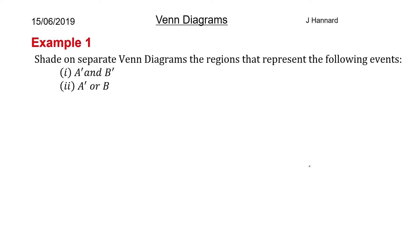So let's do an example then. Shade on separate Venn diagrams the regions that represent the following events. So we've got A dash and B dash, and A dash or B.